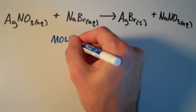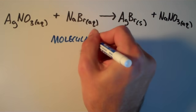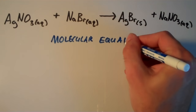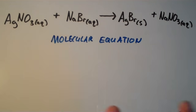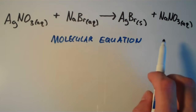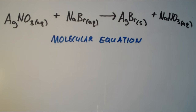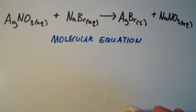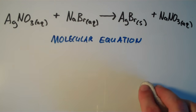A molecular equation is basically the simplest form of the equation. It shows the formula units for all of the compounds as if they existed as molecules. But in reality, in solution they don't exist as molecules — they exist as aqueous ions. Each individual ion is surrounded by water molecules. This only applies to the aqueous reactants and products.